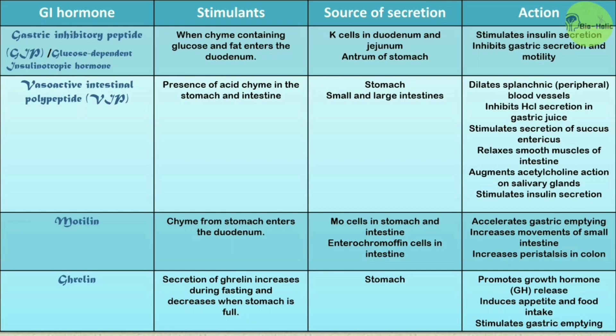Next is motilin. When chyme from the stomach enters the duodenum, motilin is secreted by MO cells in the stomach and intestine and enterochromaffin cells in the intestine. Motilin accelerates gastric emptying, increases movements of the small intestine, and increases peristalsis in the colon. Another important GI hormone is ghrelin. The secretion of ghrelin increases during fasting and decreases when the stomach is full. The source of ghrelin is the stomach; it promotes growth hormone release, induces appetite and food intake, and stimulates gastric emptying.